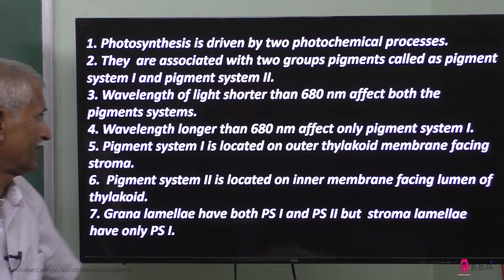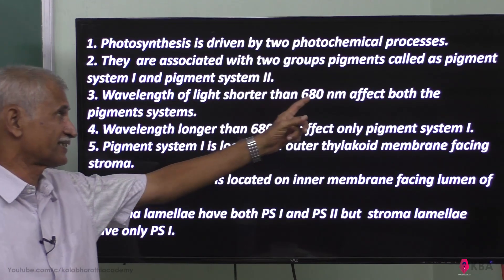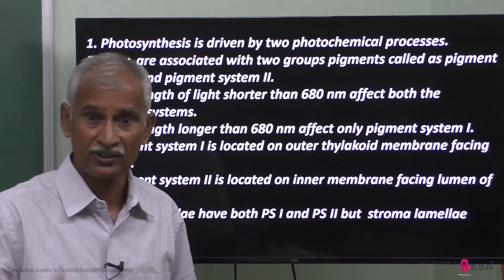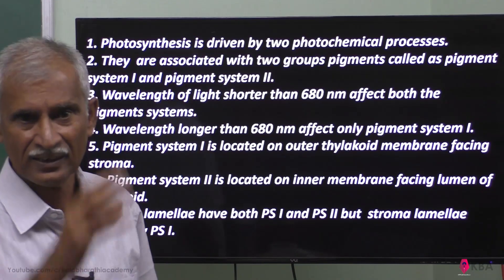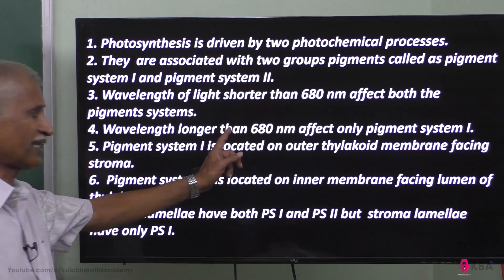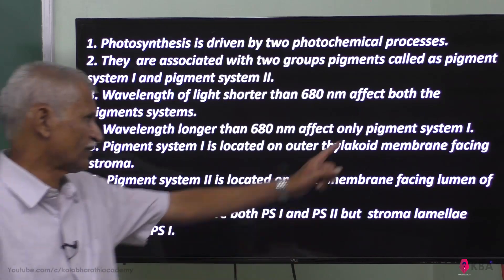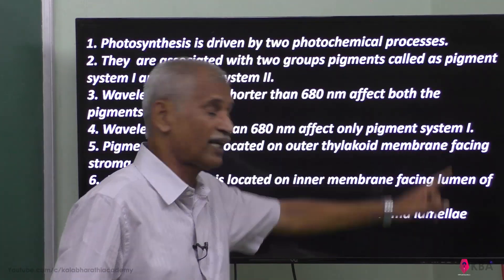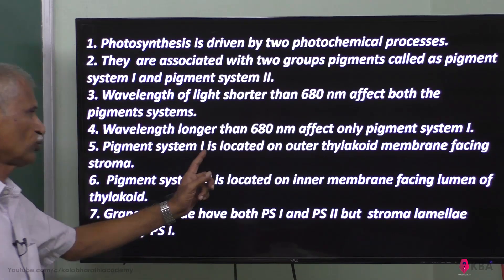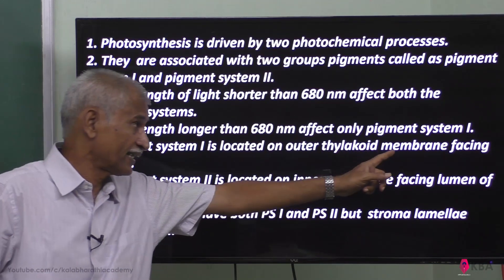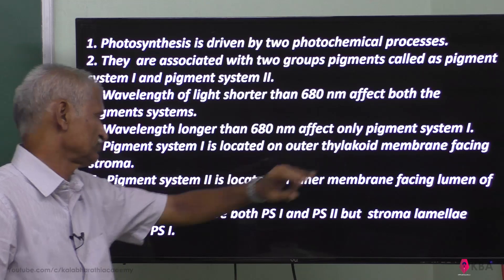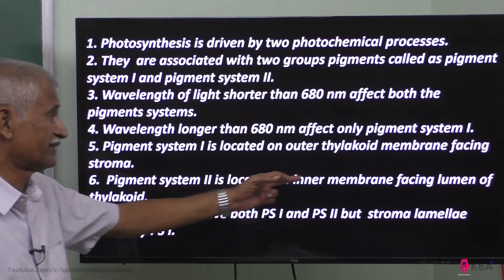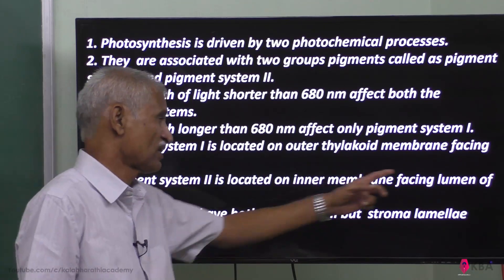680 nanometer wavelength - the wavelength of light shorter than 680 nanometers affects both pigment system one and two. Wavelength shorter than 680nm - both pigment systems absorb it. Wavelength longer than 680 nanometers affects only pigment system one. Pigment system one is located on the outer thylakoid membrane, facing the lumen on the inner membrane.